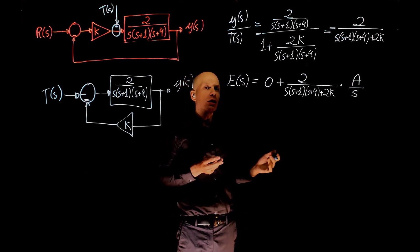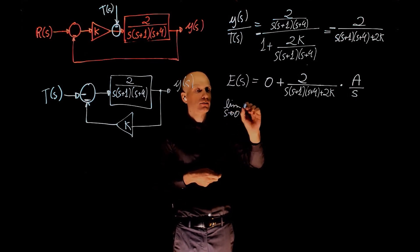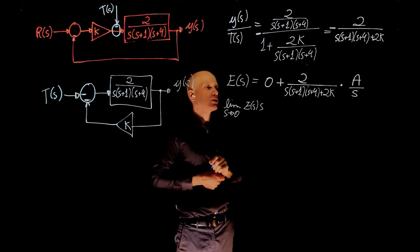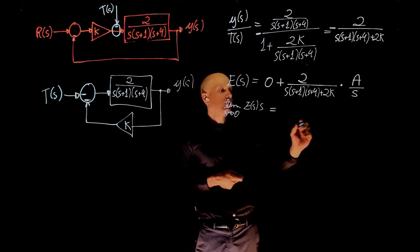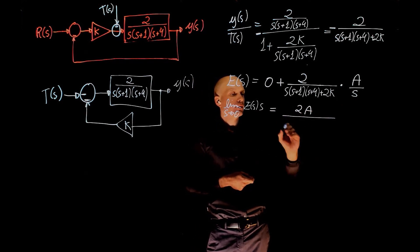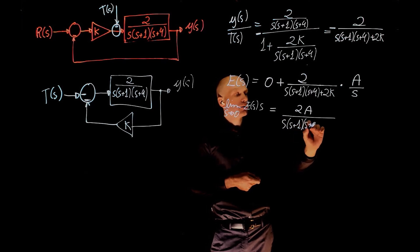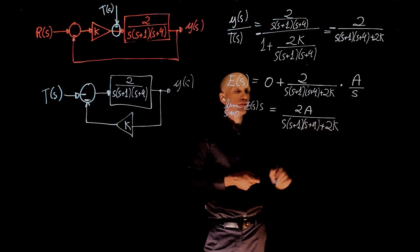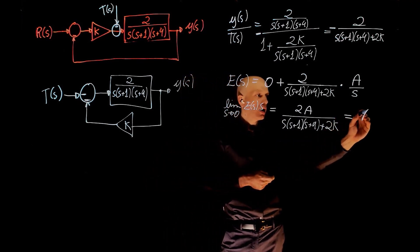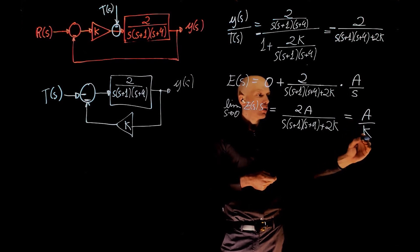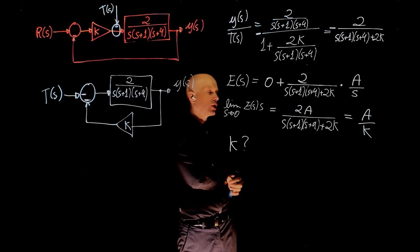The steady state error is the limit of E(s) times S when S tends to 0. Which means that this S cancels this S and you are left with 2A/(S(S+1)(S+4) + 2K). When S tends to 0, this results in A/K. 2 and 2 cancel out, this entire term is 0. The question now, what is the value of K that minimizes the effect of the disturbance in the output?